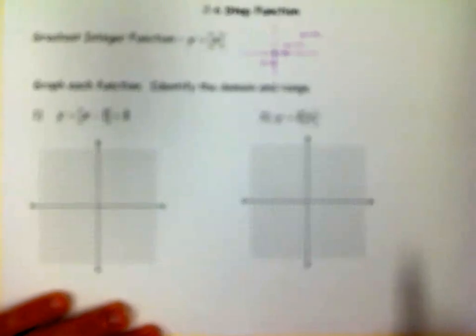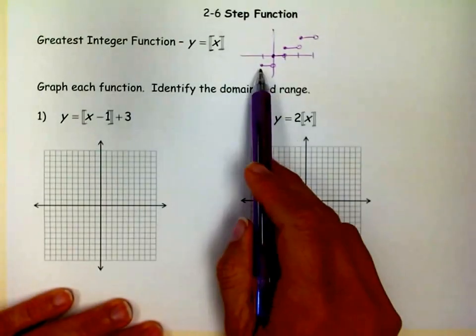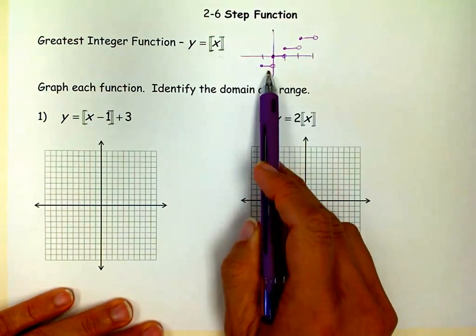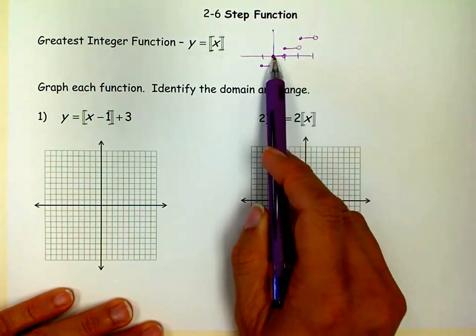You need to know that there's a closed circle on the left of each interval, there's an open circle on the right, and that this goes up, and that it's always a whole number.